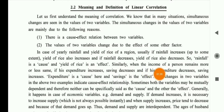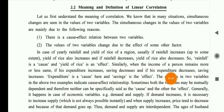Similarly, when the income of a person remains more or less the same — if expenditure increases, savings decrease; if expenditure decreases, savings increase. One variable can cause an effect on a second variable. This is the main concept of correlation.